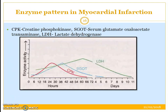Regarding the enzyme pattern in myocardial infarction — this graph clearly shows that in the case of myocardial infarction, the first enzyme to be released and achieve higher levels is CPK, within the first 6 to 18 hours. Within the first 24 to 48 hours is the release of serum glutamate oxaloacetate transaminase. Lastly, LDH or lactate dehydrogenase enzyme follows.